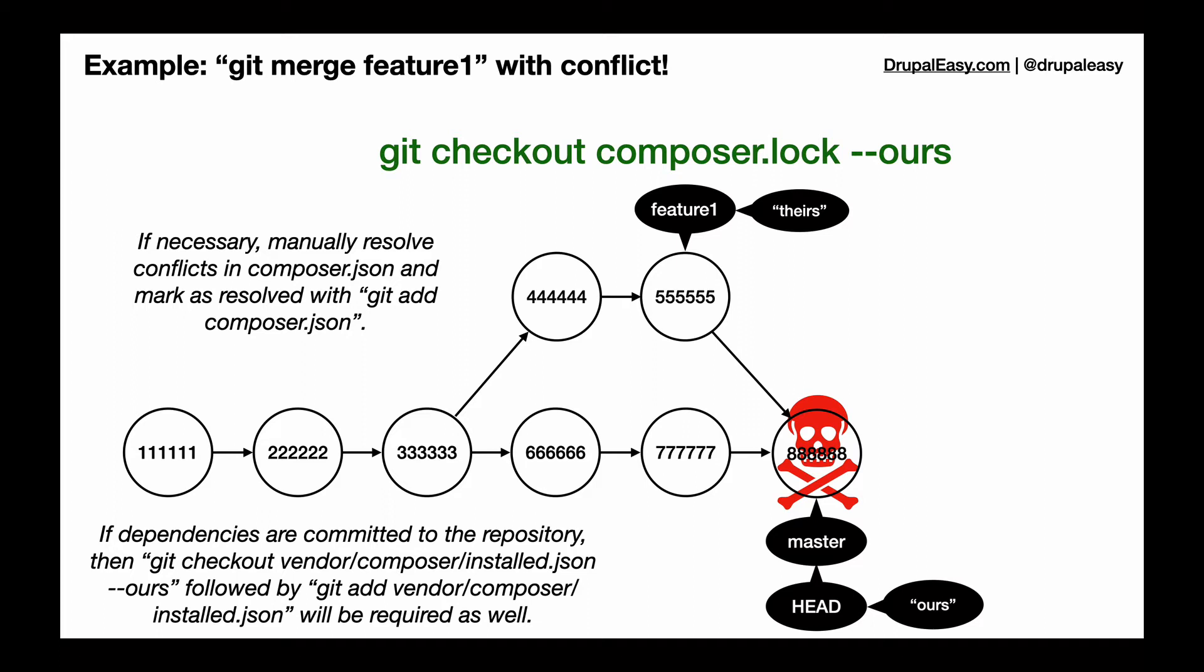When the composer.lock file is in conflict, it's impossible to choose ours or theirs and have it fully rectified. Because remember, that content hash value that appears inside the composer.lock file is calculated based on the dependencies present in the particular branch. So neither the value of the content hash in the 555 commit or in the 777 commit is correct.